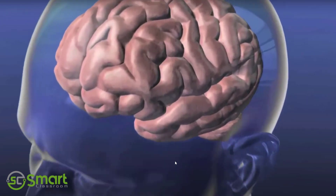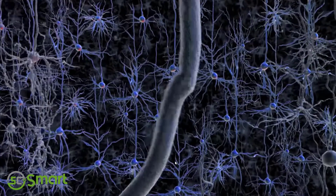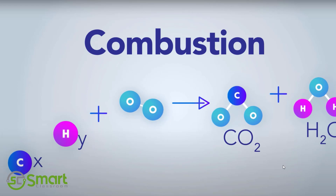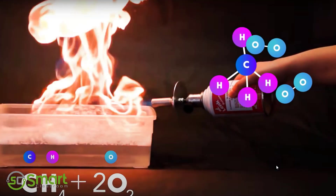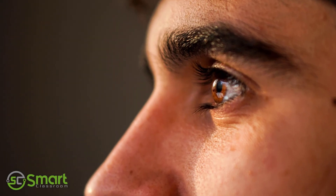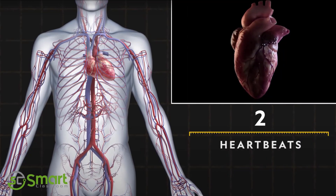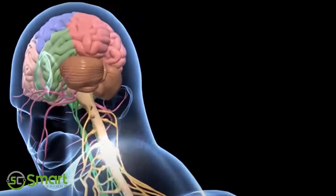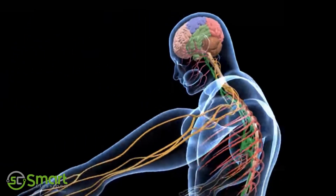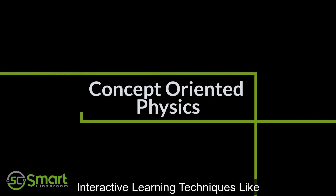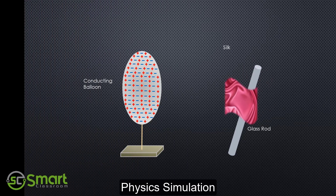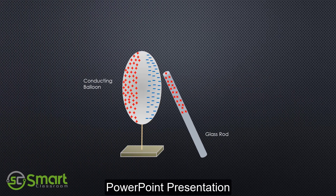Our bodies need electricity because muscle contraction requires it. Your nervous system is driven because of electricity. Atoms, molecules, all chemical reactions exist because of electricity. You cannot see, your heart would not beat, and you could not even think without electricity.